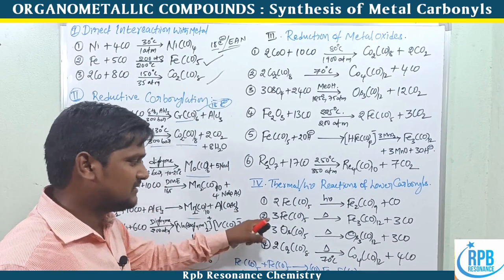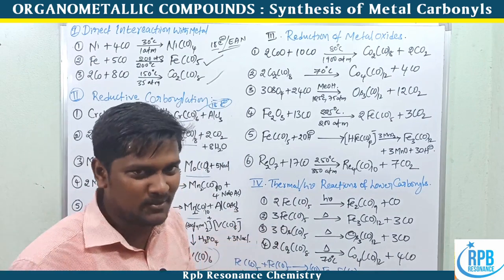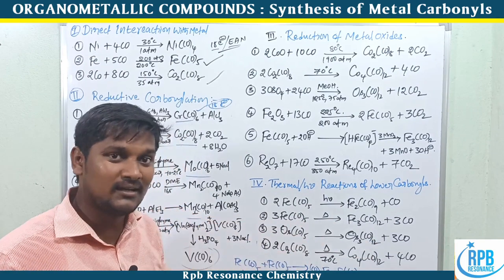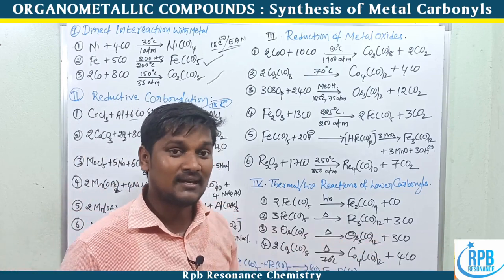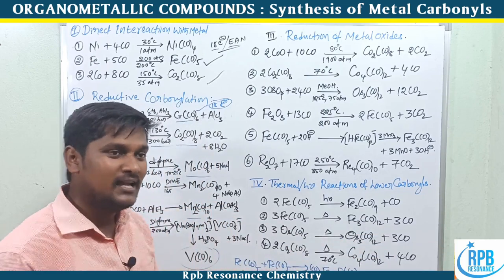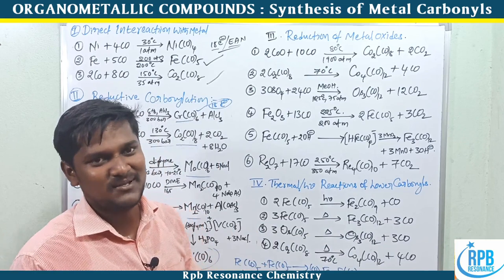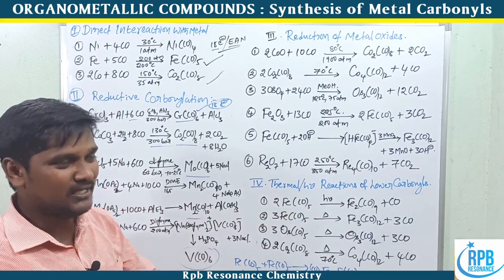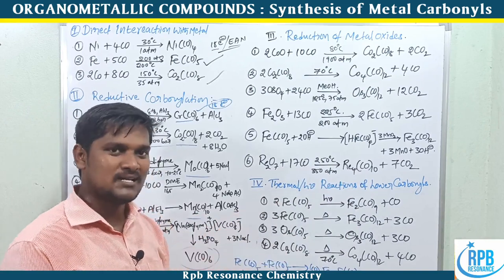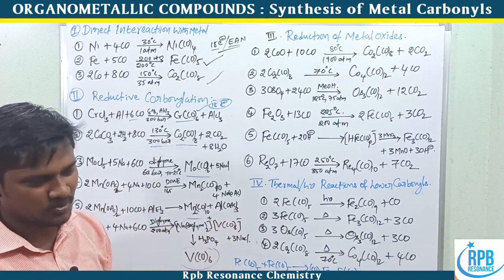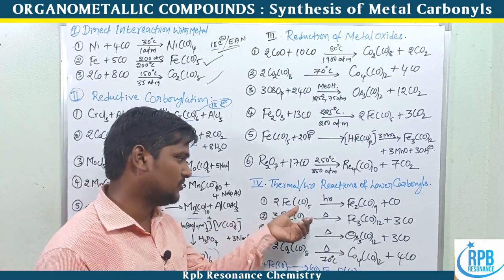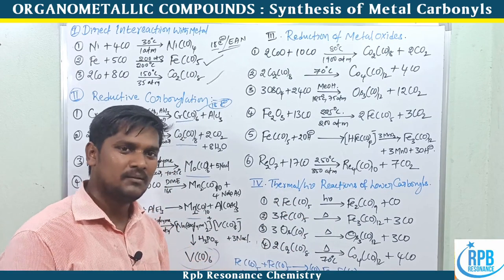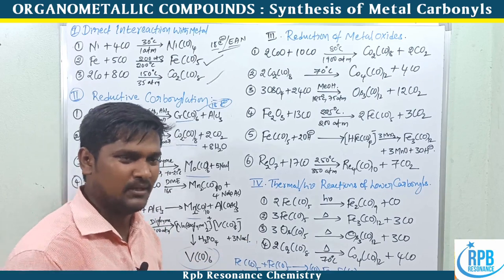Three equivalents of Fe(CO)5 under photolytic conditions produce Fe3(CO)12, with loss of three carbonyls — because three metal-metal bonds form, and for each metal-metal bond one carbonyl is eliminated from the parent mononuclear carbonyl. This oligomerization behavior is characteristic of iron metal carbonyls.